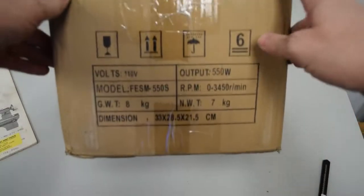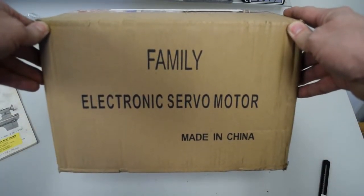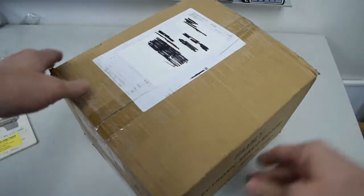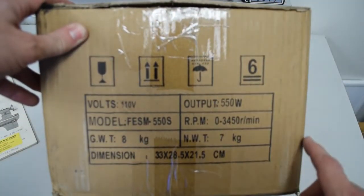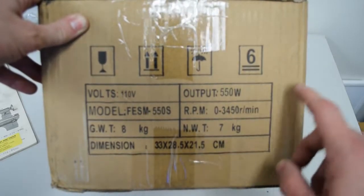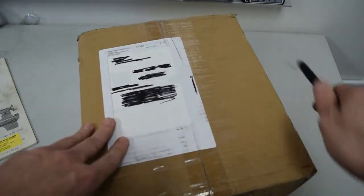So first we'll take a look. This says it's a family electronic servo motor made in China, so it'll fit right along with the lathe. 550 watts, zero to 3,450 rpm. The whole thing is pretty small. So let's crack her open here and take a look.